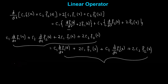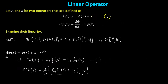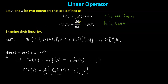We can say that operator b is linear. So operator a turned out to be not linear, whereas operator b turned out to be linear. This is how we can check the linearity of given operators. Thank you.